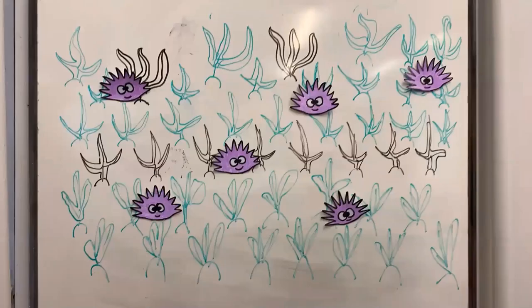With no starfish present, sea urchins are evenly distributed and subtidal kelp grows uniformly without patches.